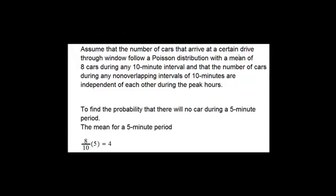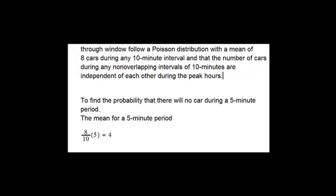Assume that the number of cars that arrive at a certain drive-through window follow a Poisson distribution with a mean of 8 cars during any 10 minute interval, and that the number of cars during any non-overlapping interval of 10 minutes are independent of each other during the peak hours. That's what a Poisson distribution will be. And say we want to find the probability that there will be no car during a 5 minute period.